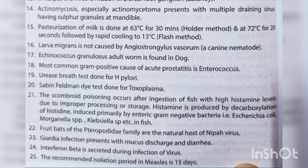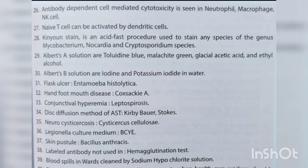Fruit bats of the Pteropodidae family are the natural host of Nipah virus. Giardia infection presents with mucus discharge and diarrhea. Interferon beta is secreted during viral infection. The recommended isolation period in measles is 15 days. Antibody-dependent cell-mediated cytotoxicity (ADCC) is seen in neutrophils, macrophages, and NK cells.